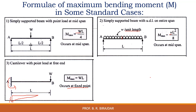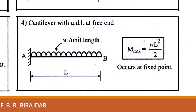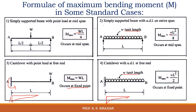For a cantilever beam with a uniformly distributed load w per unit length over the entire span, the total load is w × L. Again, the maximum bending moment occurs at the fixed end. The maximum bending moment value is wL²/2, where w is the load per unit length. These four standard cases should be remembered so that the maximum bending moment can be calculated directly.